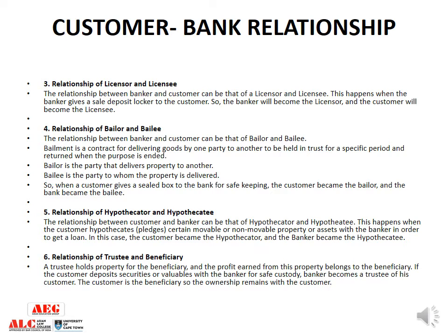The relationship of bailer and bailee — the relationship of bailment occurs when one person gives his or her movable goods to another person for keeping those goods until a specific purpose or a specific time is fulfilled. The person who gives the goods is called the bailer and the person who keeps the goods is called the bailee. So if the customer is giving goods to the banker for some specific purpose or specific time, the customer becomes the bailer and the banker becomes the bailee.